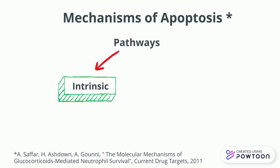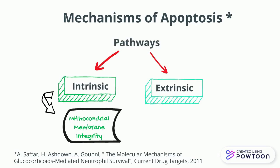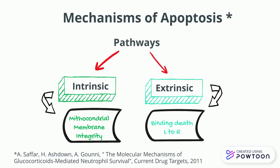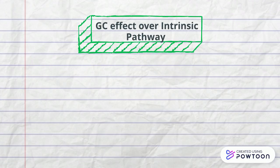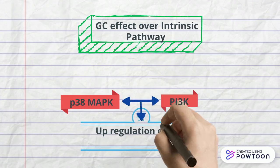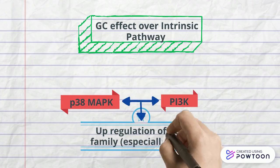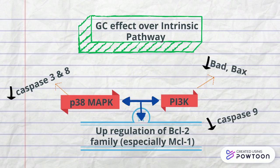The intrinsic pathway, which ultimately affects mitochondrial membrane integrity, and the extrinsic one, which is initiated by binding dead ligands to their receptors. What is the effect of glucocorticoids over the intrinsic pathway? The major checkpoint is a regulation of the BCL2 family, which contains antiapoptotic factors, through other kinases that also inhibit apoptotic enzymes.